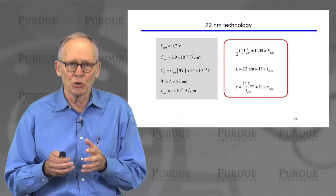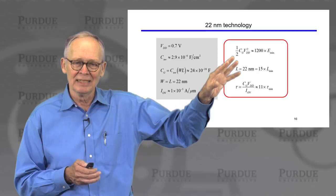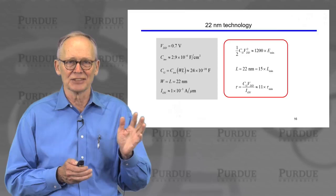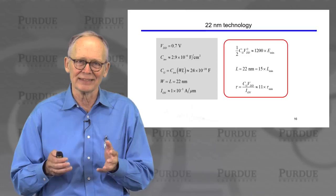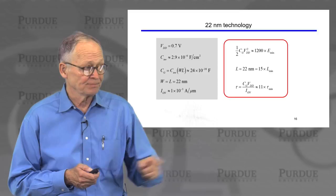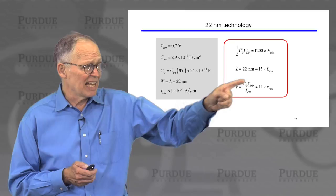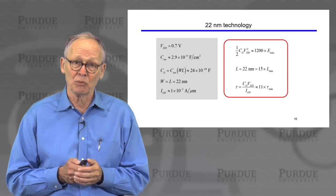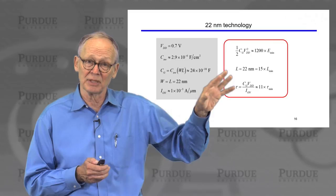The minimum switching energy assumes a probability of one-half that the switching event occurred, but we need much higher probabilities for low-error digital processing — about a factor of 10 to the fourth between on and off. So it's not surprising that in practice, the switching energy is considerably higher. For minimum channel length, at 22 nanometer technology we are within about an order of magnitude of the fundamental limit of about 1.5 nanometers, so we are relatively close.